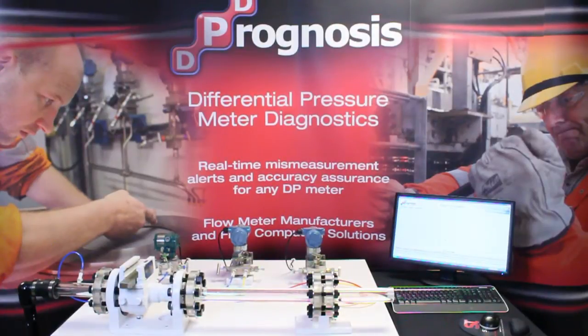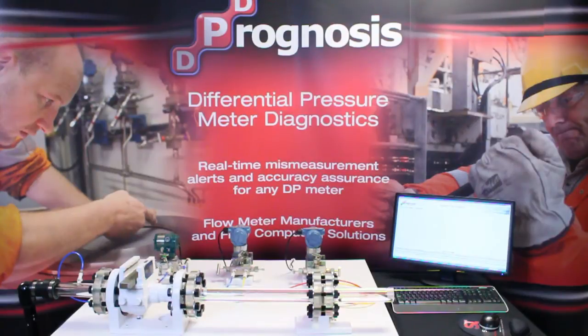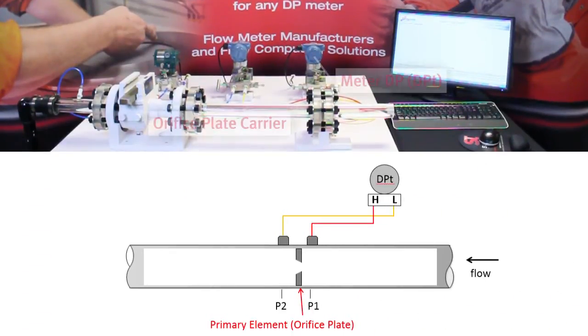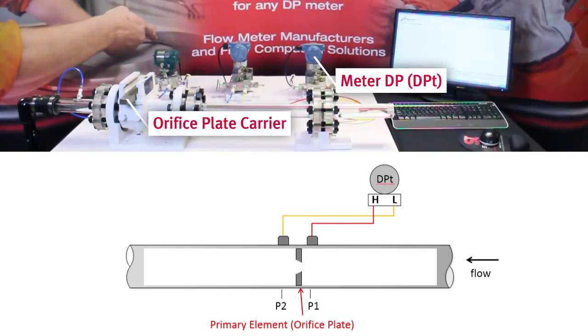Here we see a real orifice meter run set up to demonstrate the Prognosis system. The essential components to any DP meter are the primary element causing a drop in fluid pressure and a DP transmitter measuring that drop in pressure, which is used to predict the rate of flow through the meter.